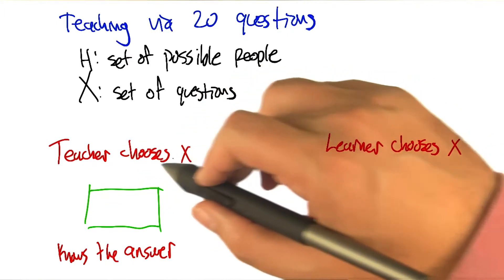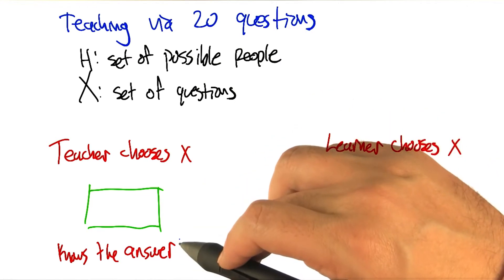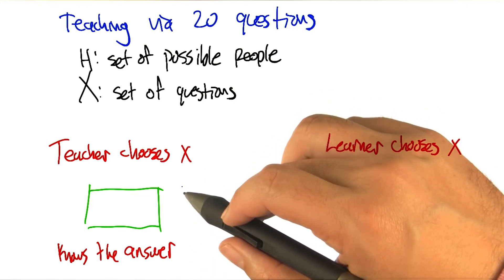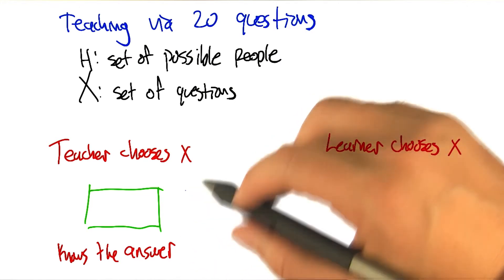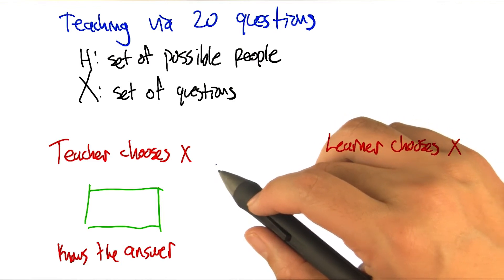All right, we're back. So let's think this through. The teacher gets to suggest to the student any question. The teacher knows the answer, and the teacher would like the learner to get the answer as quickly as possible, not requiring the full 20 questions if possible. So what do you think? What do you think the teacher could do as a good strategy here?